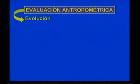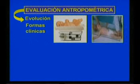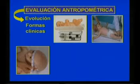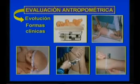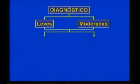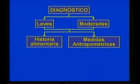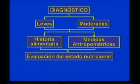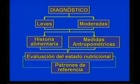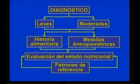Cuando realizamos la evaluación antropométrica, podemos determinar mediante sencillas mediciones elementos que van desde la evolución hasta la forma clínica de la desnutrición. Son de mucha utilidad el peso y la talla, la circunferencia cefálica y torácica, la medición del pliegue cutáneo tricipital y la circunferencia muscular del brazo. Para el diagnóstico de las formas leves y moderadas, nos basaremos en la historia alimentaria y en las medidas antropométricas. La evaluación del crecimiento requiere disponer de patrones de referencia que expresen las características morfológicas de los individuos de la población en estudio.